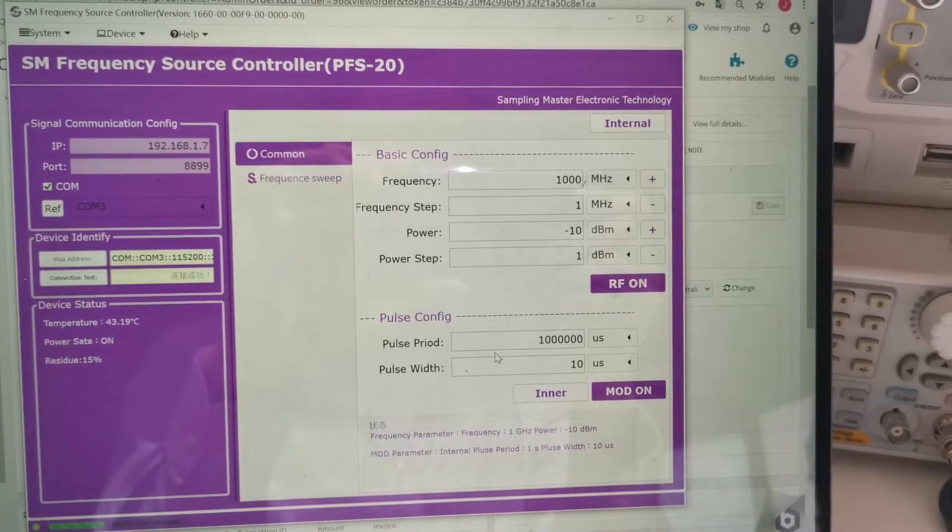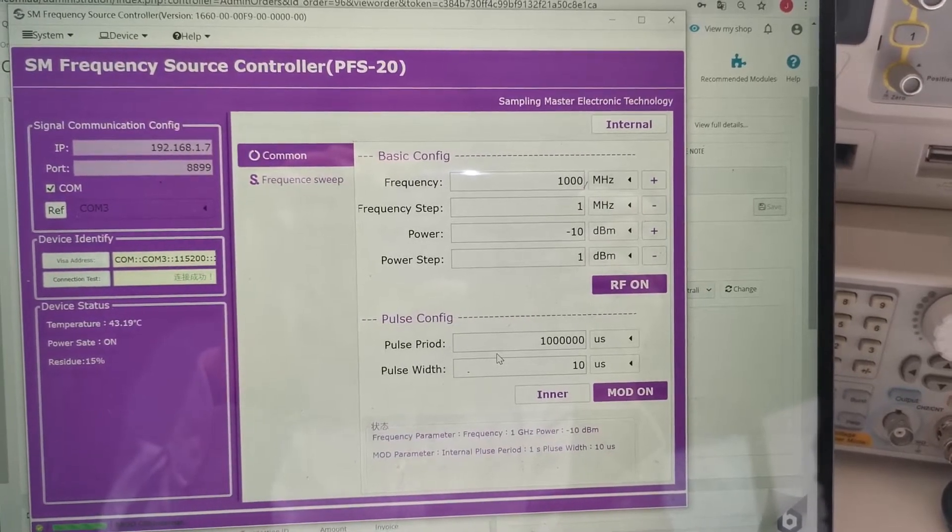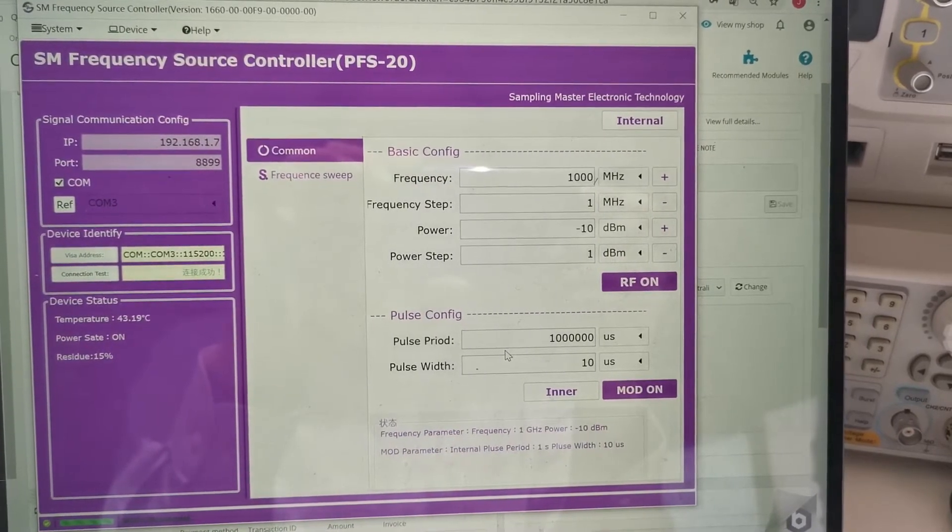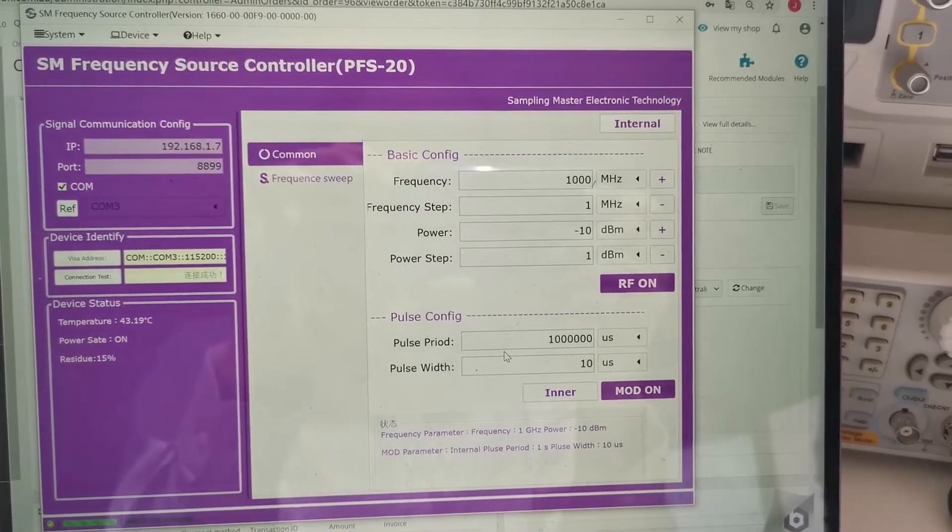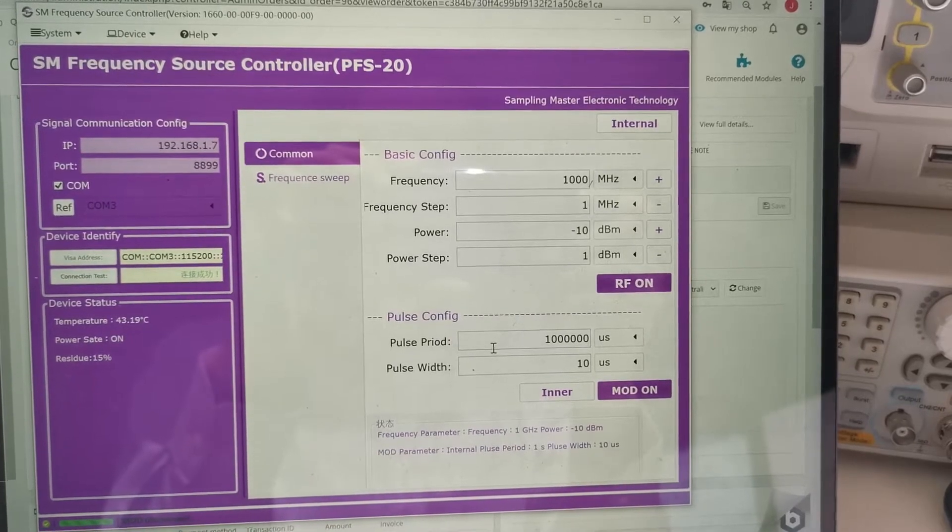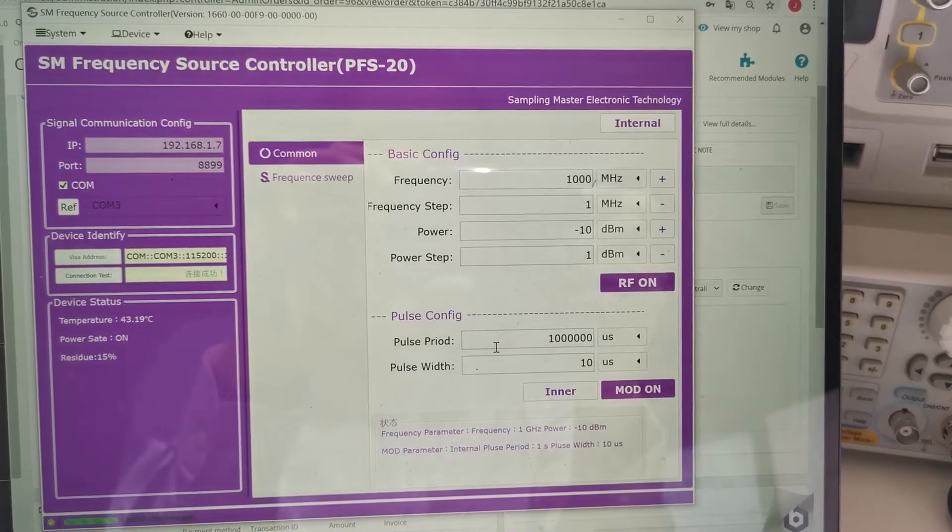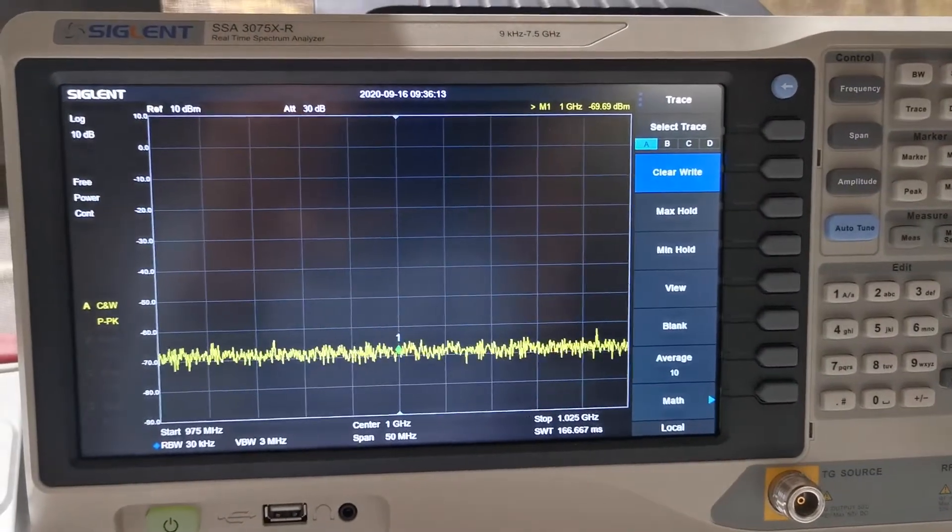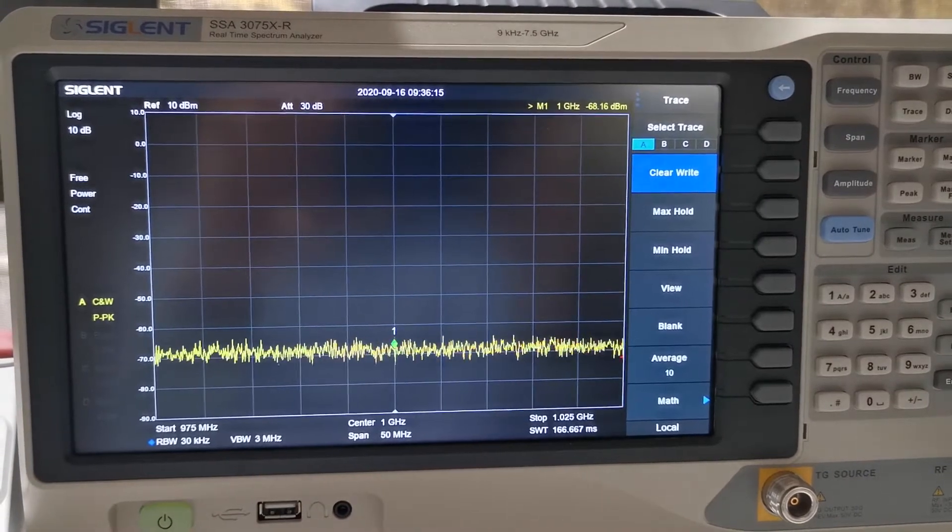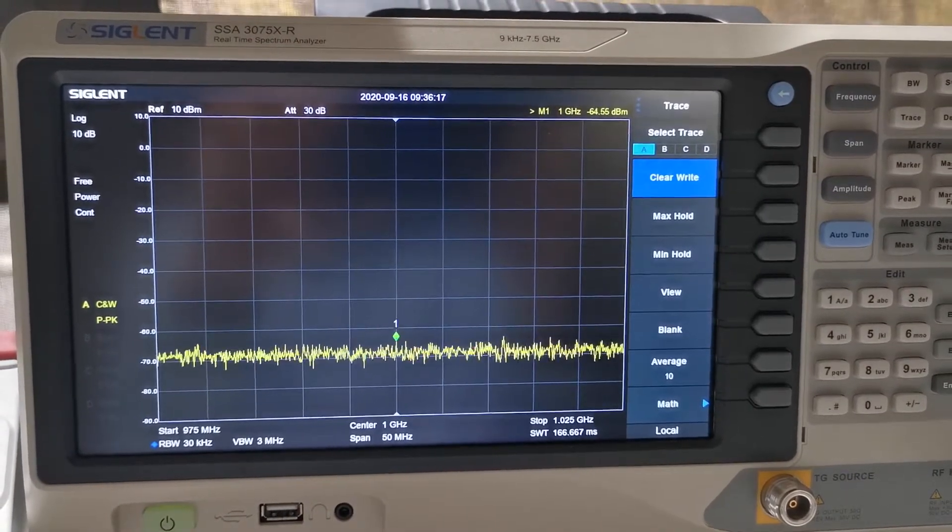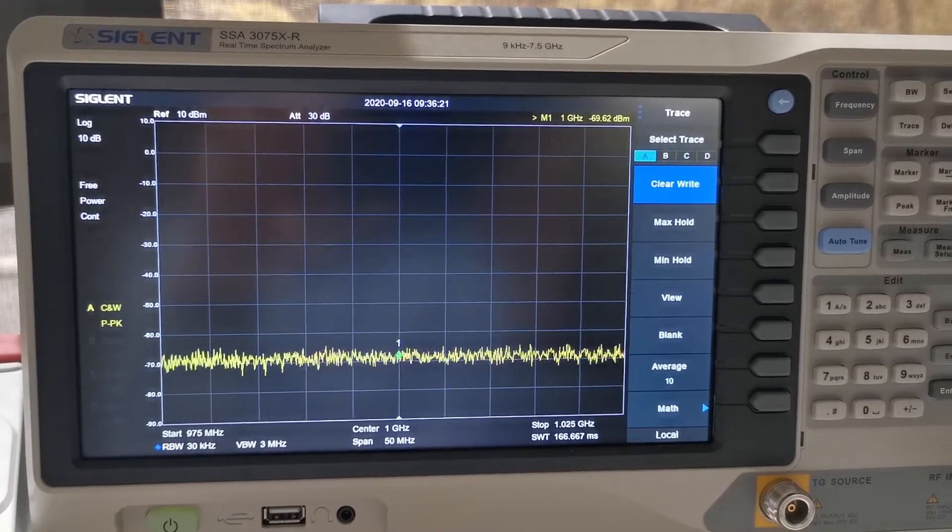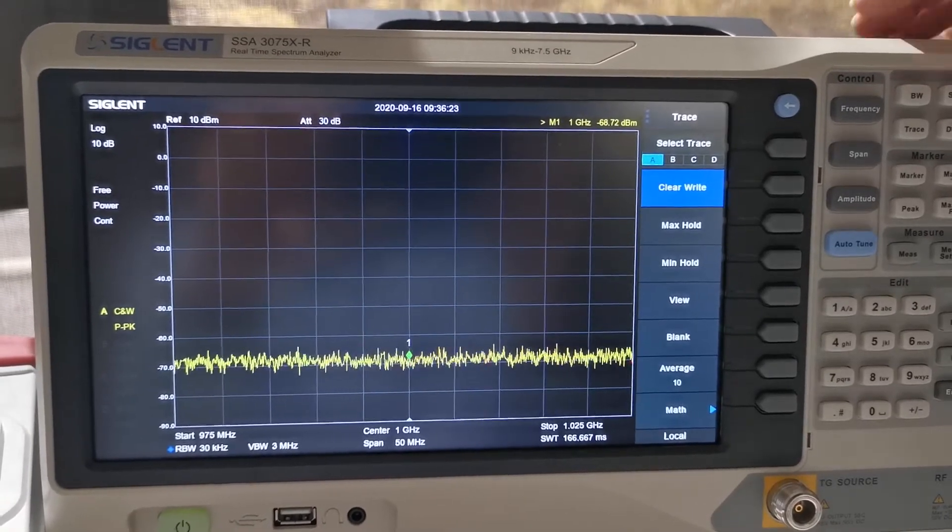Now we change the parameter of the PFS RF generator and reduce the duty cycle further from 1x1000 to 1x100,000. Let's find out what we can see from the normal spectral analyzer here. Oh, you can't see anything here. Remember we used to see some spurs when the duty cycle was 1x1000. Now we are not able to see those spurs now.